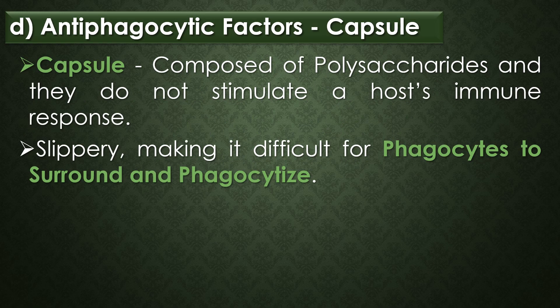The fourth virulence factor is antiphagocytic factors. The first antiphagocytic factor is the capsule. The capsule of many pathogenic bacteria are effective virulence factors because many capsules are composed of polysaccharides and they do not stimulate a host immune response. Capsules are often slippery and make it difficult for phagocytes to engulf and phagocytose the bacteria.